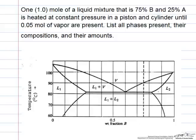So we start out with a total of 1 mole, and we end up with vapor at 0.05 moles and a liquid mixture. We're along this dashed line at 0.75.